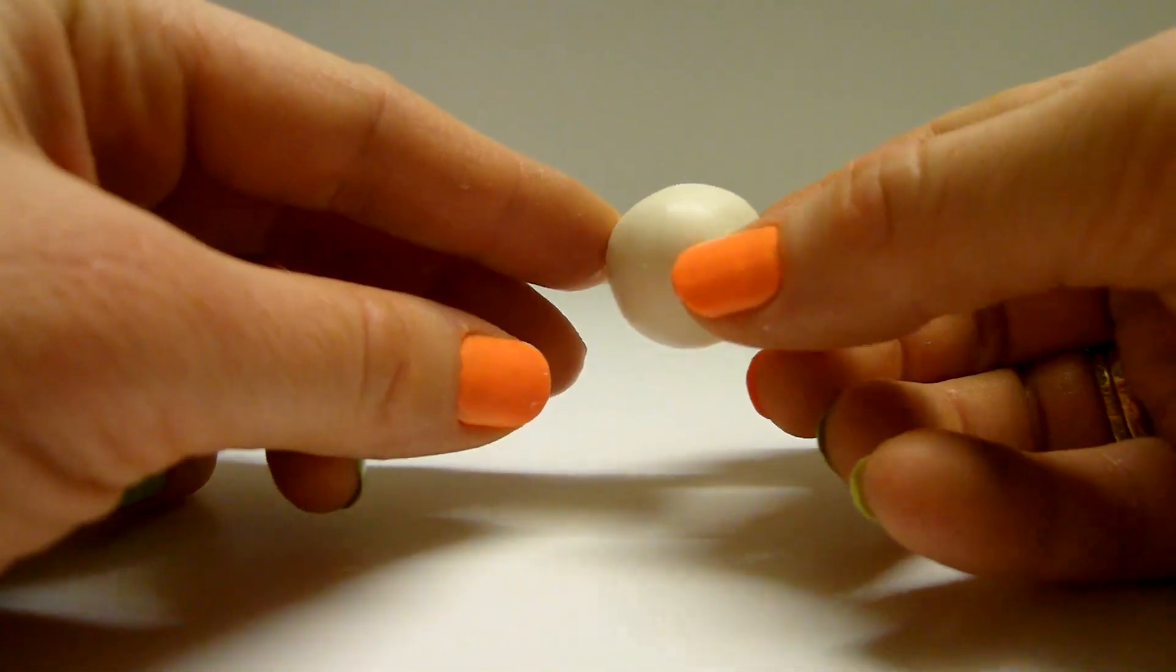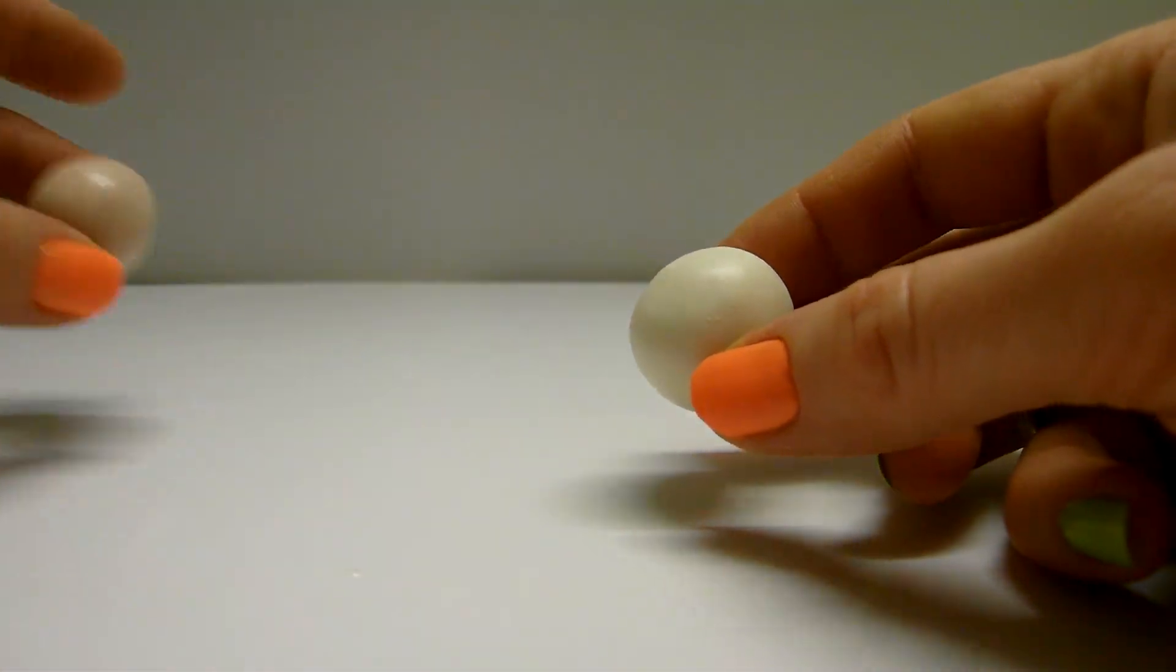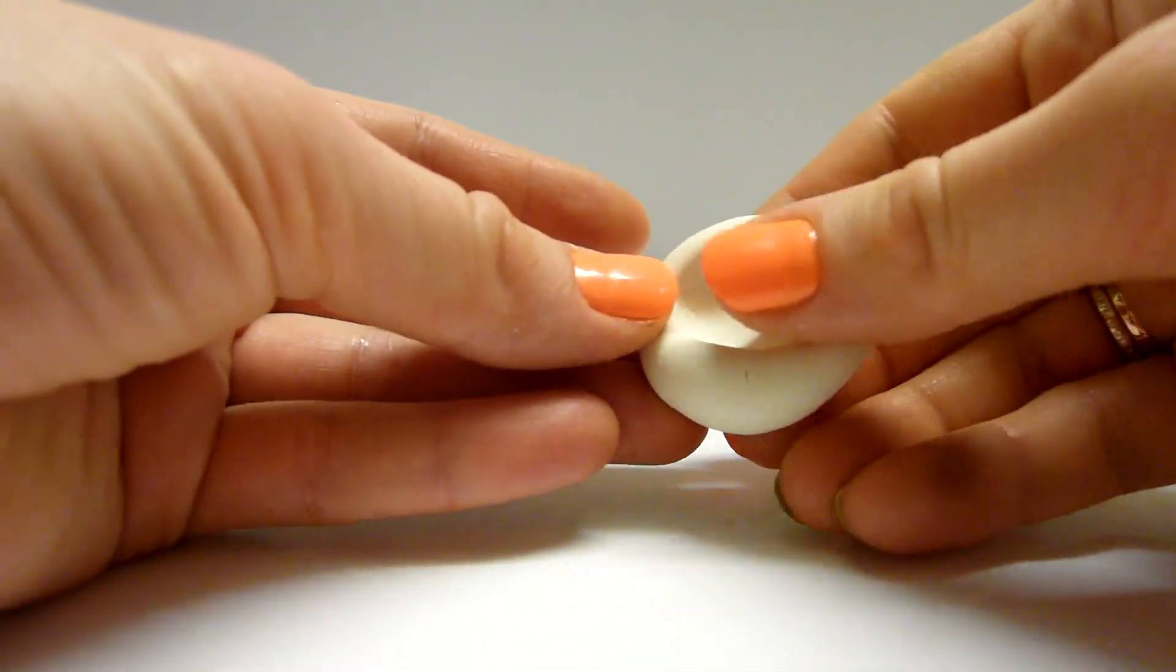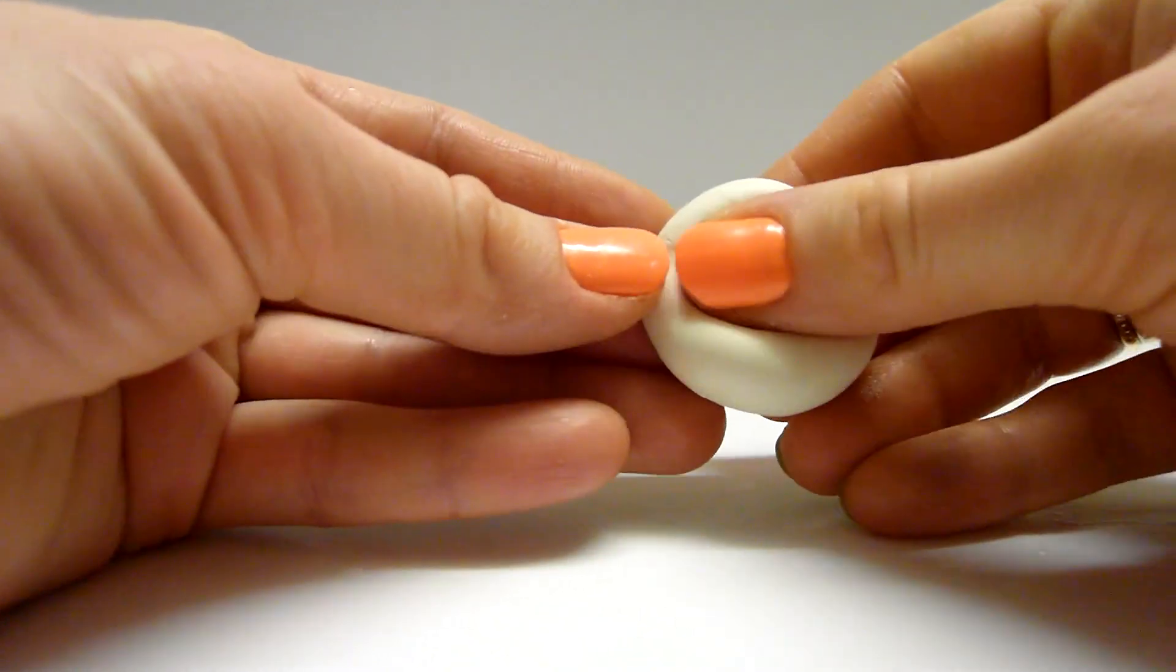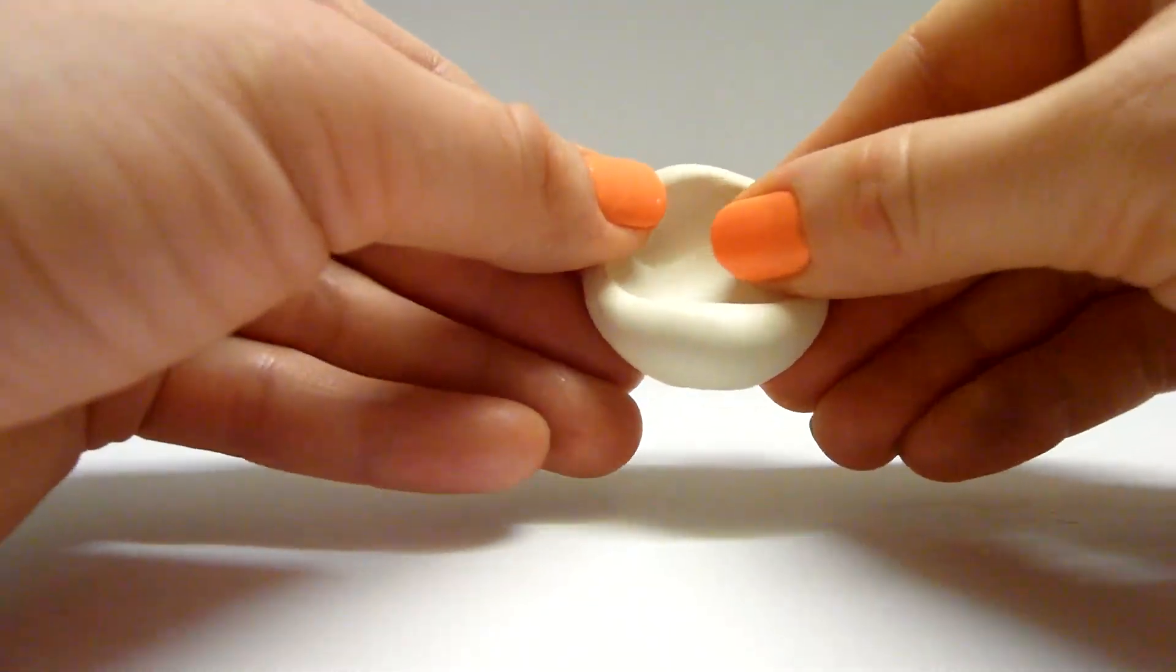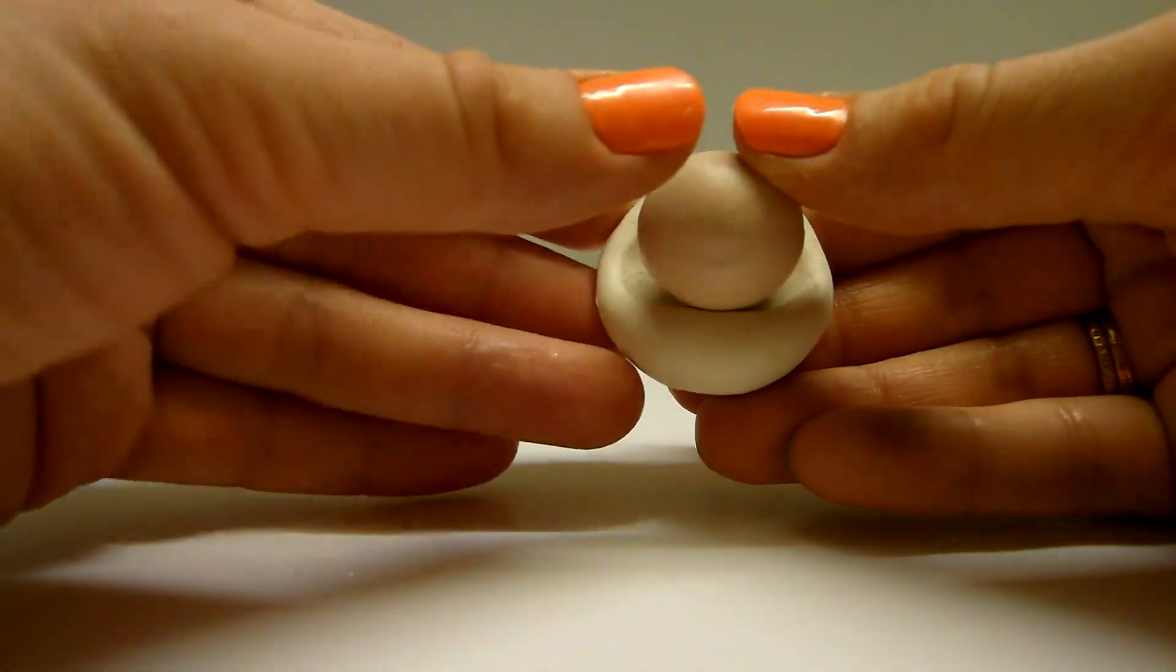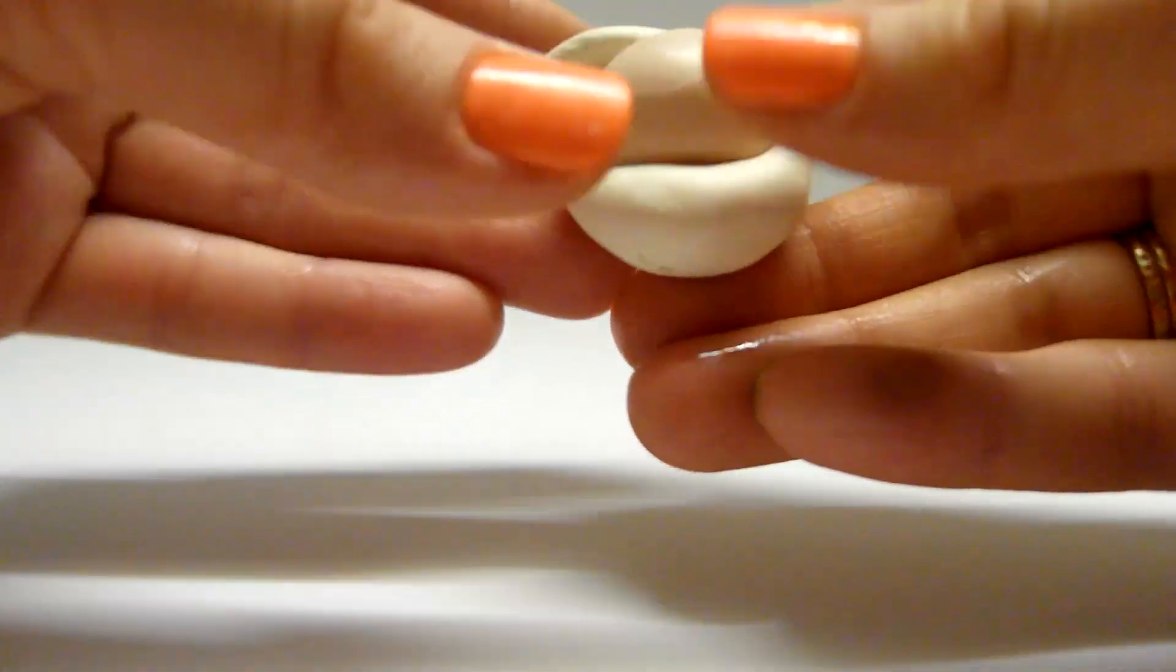Then, let's make a beard. Create a ball of white clay. Flatten this ball in the center. And insert the head there. Join the parts smoothing the edges.